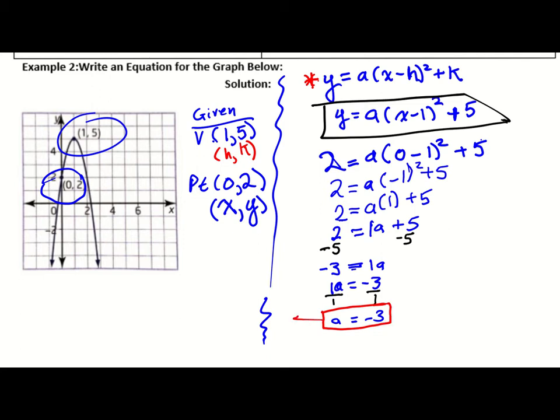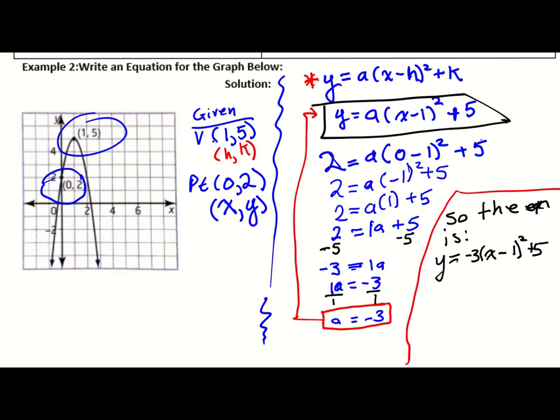What we're going to do is take that a value and put it back into the original equation so that we finally know what our equation is. Now we're going to restate our equation. The equation is y equals negative 3 times x minus 1 squared plus 5. And now we have our quadratic equation, and we're done.